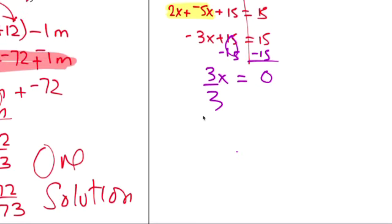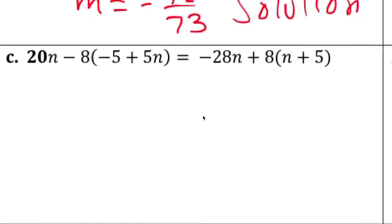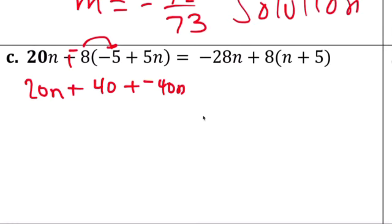You divide by 3, divided by 3, one solution. Okay, additive inverse: 40 plus negative 40n, 20n, distribute.